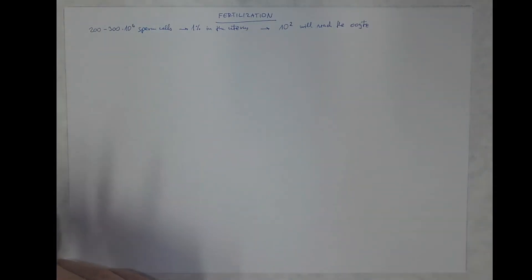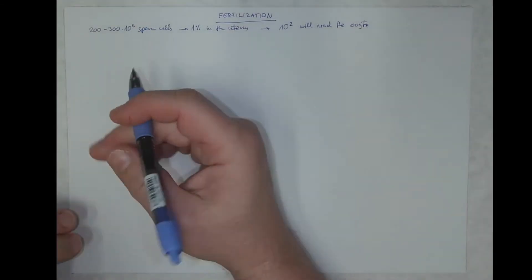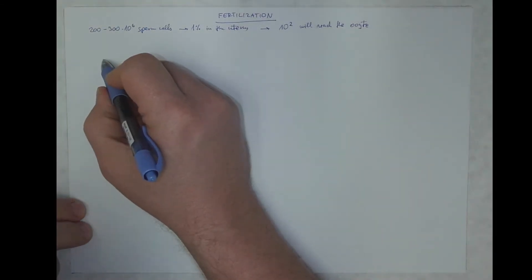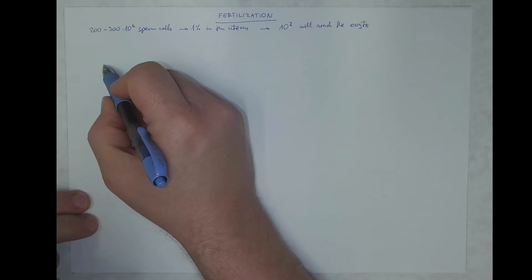The first sperm that will reach the oocyte will get in touch with the envelopes of this oocyte and will penetrate through these layers.